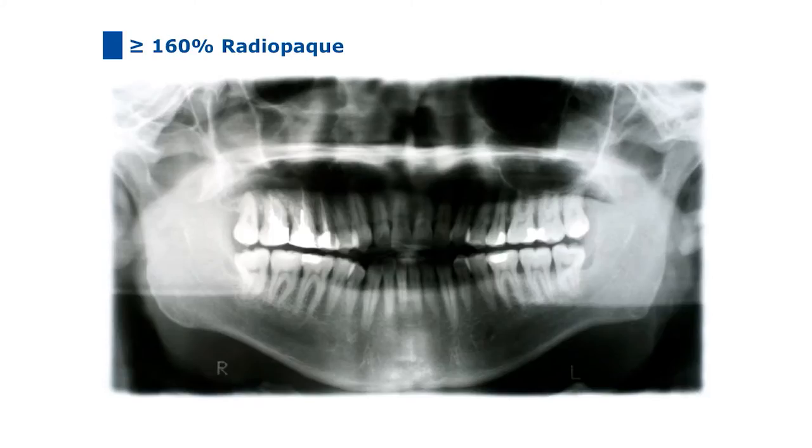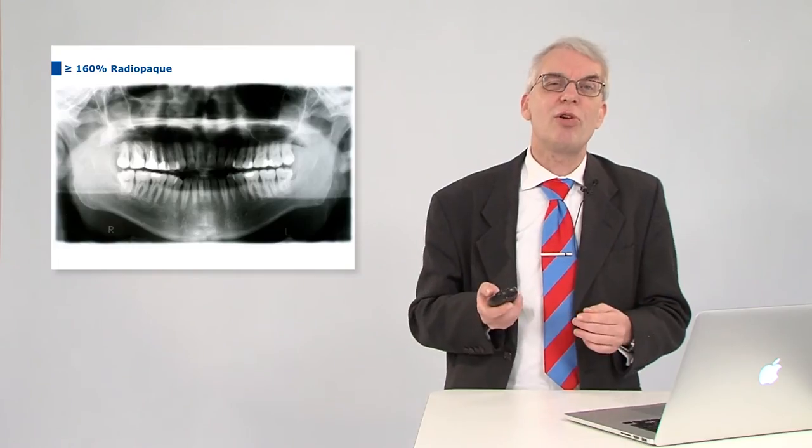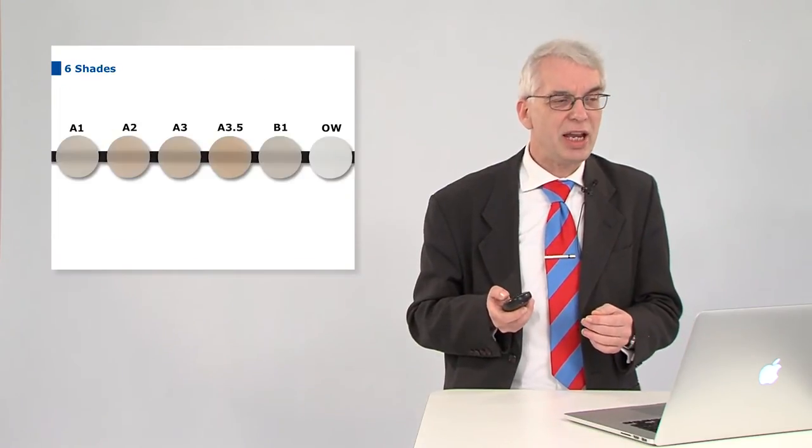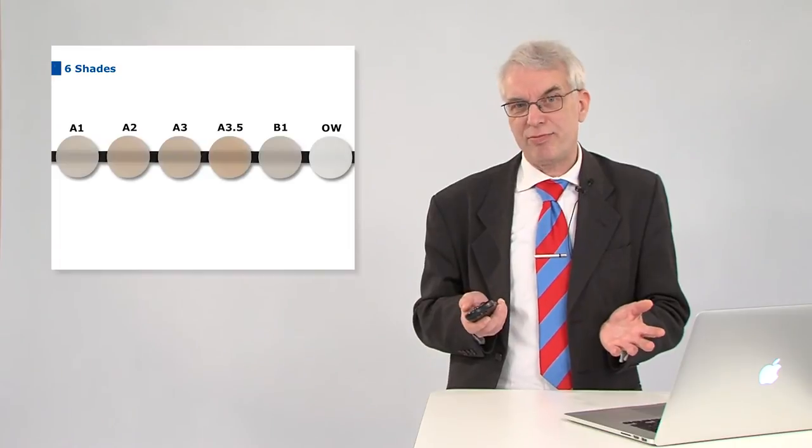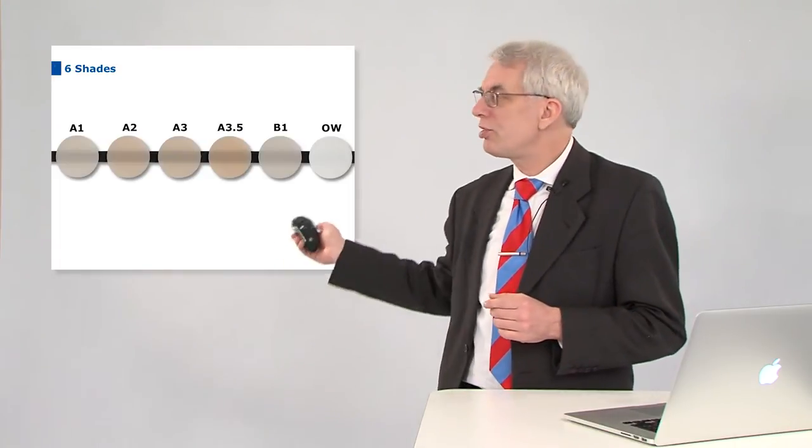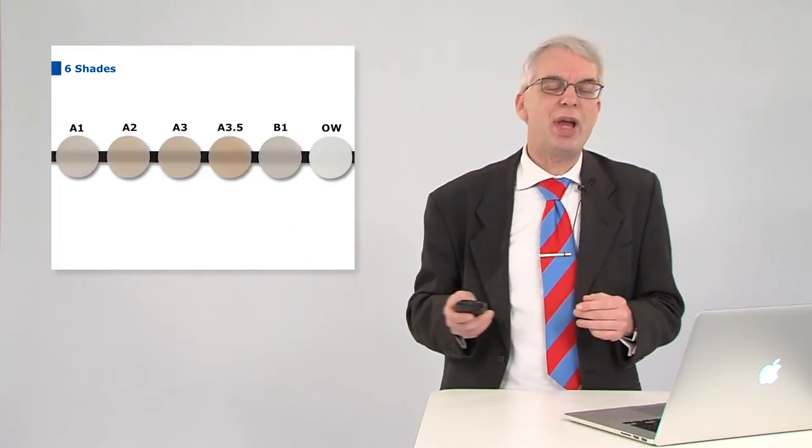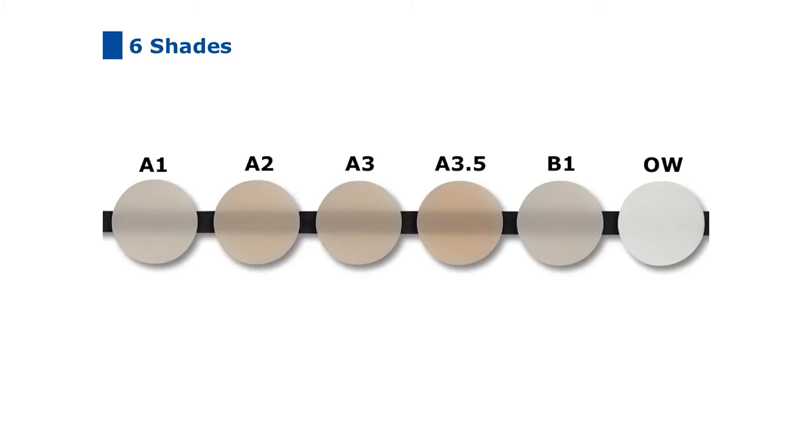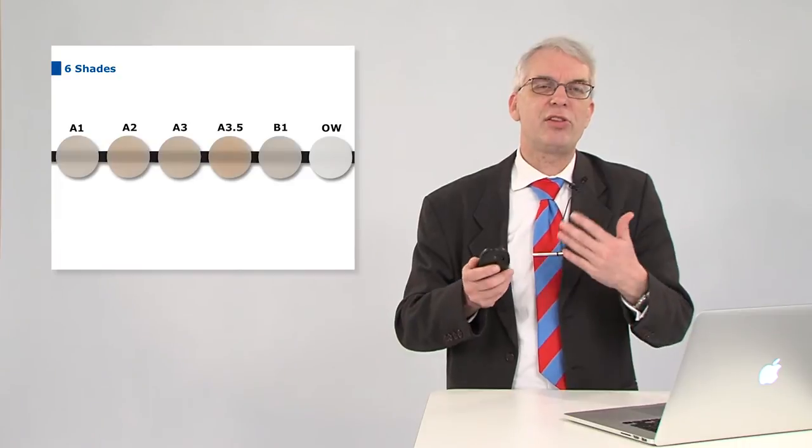We have a very good radio opacity of about 160%, so that allows you to see CONSTIC very clearly on your x-ray. And we got six shades. And the one thing that stands out a little bit is this opaque white. And as you can see, this opaque white is really opaque. So you can use that to cover up any irregularities and things that you don't want to shine through your restoration.